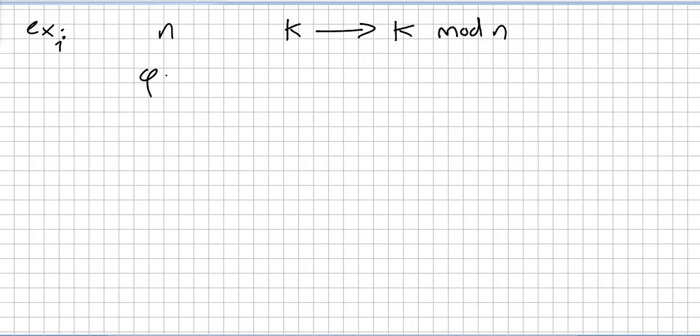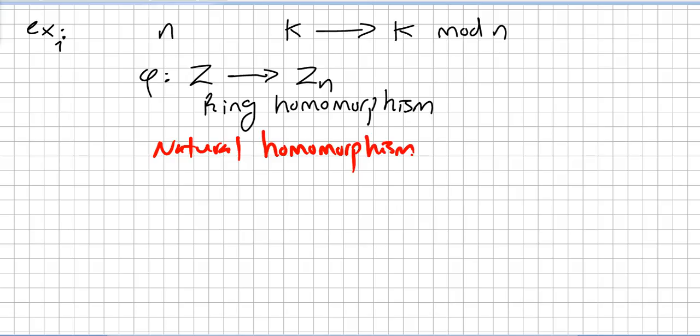So this is a ring homomorphism that is taken from the integers into Z_N. So this is clearly a ring homomorphism. This is also called the natural homomorphism from the integers to Z_N.